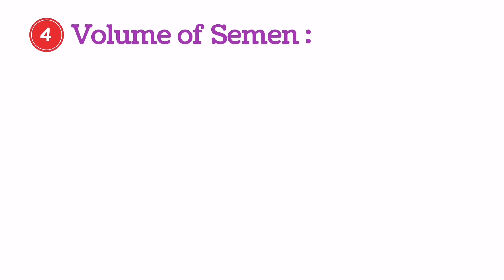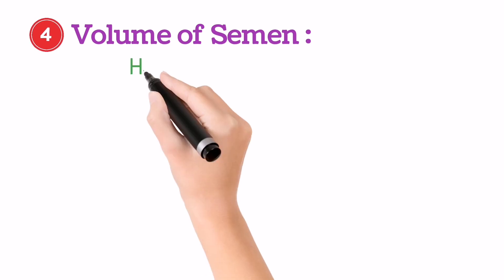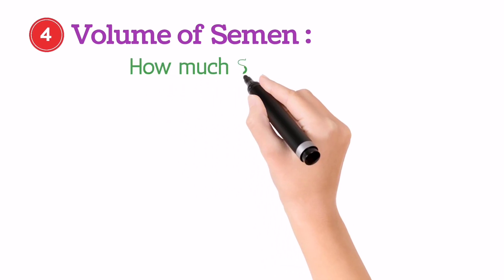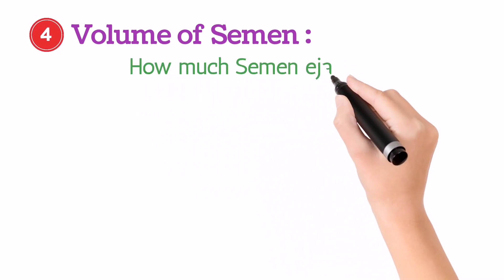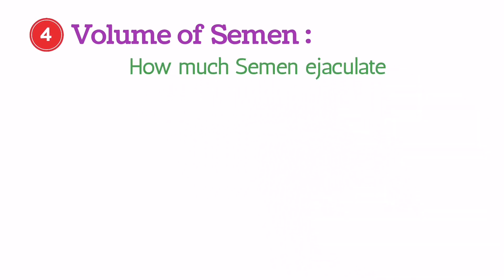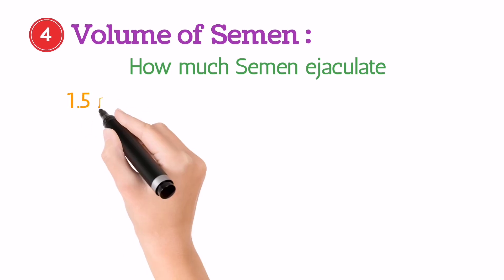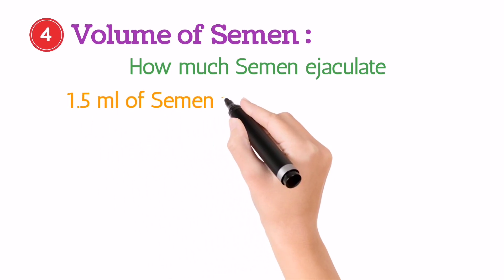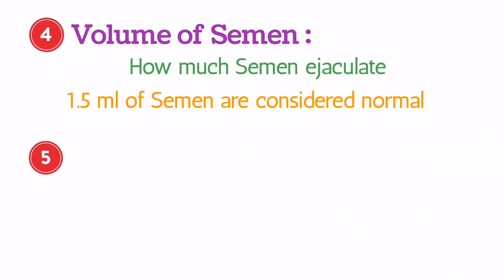Fourth, volume. In this section of the analysis, you should check how much semen is ejaculated. The normal ejaculated volume should be 1.5 milliliter or more than 1.5 milliliter.